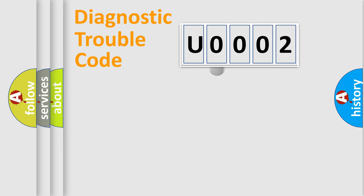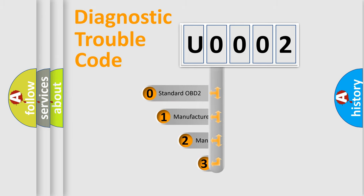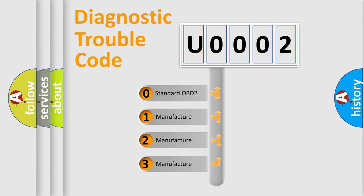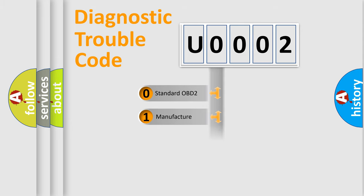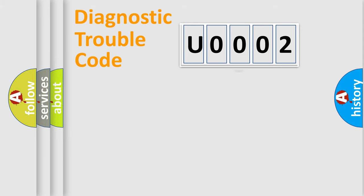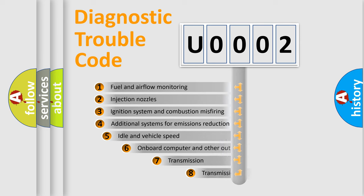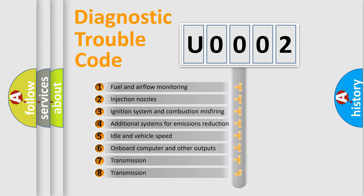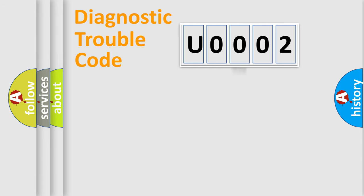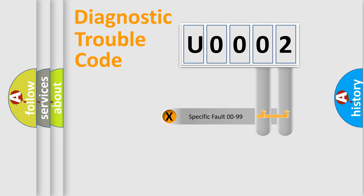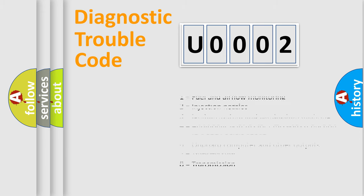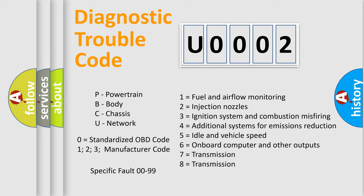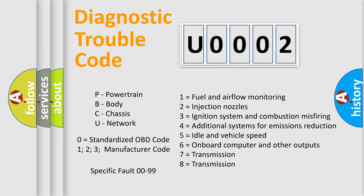This distribution is defined in the first character of the code. If the second character is expressed as zero, it is a standardized error. In the case of numbers 1, 2, or 3, it is a more manufacturer-specific expression of the car error. The third character specifies a subset of errors. The distribution shown is valid only for the standardized DTC code. Only the last two characters define the specific fault of the group. Such a division is valid only if the second character code is expressed by the number zero.